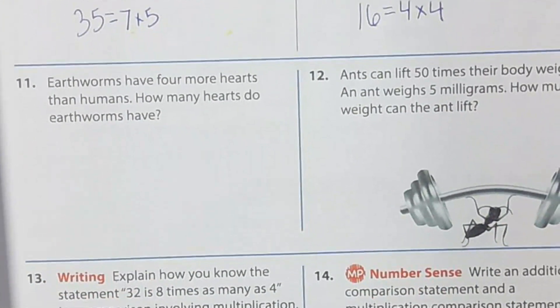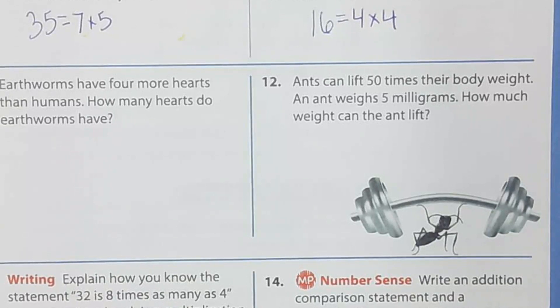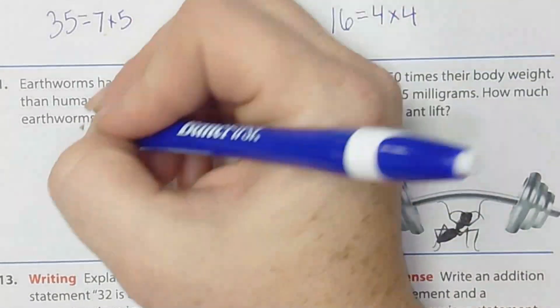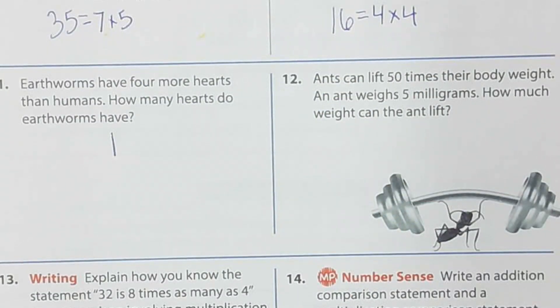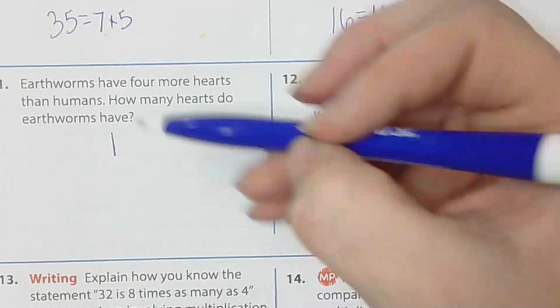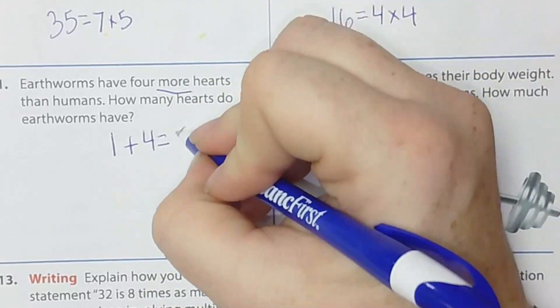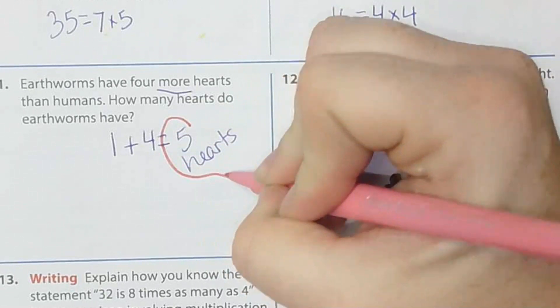Okay, we're going to go down to number 11 and 12. Do not get worried that these are word problems. I know a lot of times we see those word problems and we kind of get nervous. Number 11 says earthworms have 4 more hearts than humans. How many hearts do earthworms have? I need us to write it as a problem. So, how many hearts do humans have? Everyone? One. Okay. But, we're doing 4 more hearts. So, earthworms have 4 more than humans. How would I write that as a problem? Let's try it. 1 plus 4 equals 5. Perfect. Are these ones 5 hearts? 5 hearts. So, there's like 5 hearts? I don't think.